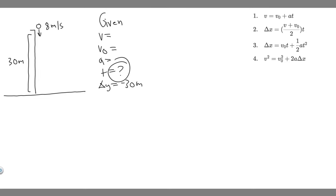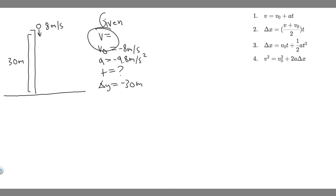Acceleration — this is a free-fall problem, meaning the acceleration is just the force due to gravity, which is minus 9.8 meters per second squared. The initial velocity is 8 meters per second, but since it's going downwards we label it negative: minus 8 meters per second. The final velocity we don't know — it will be its speed when it strikes the ground — but we don't need to solve for it.